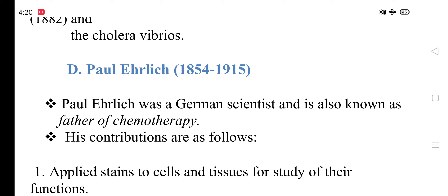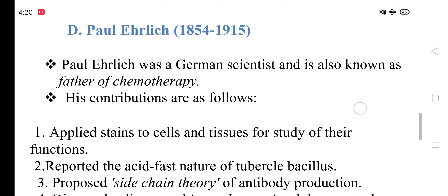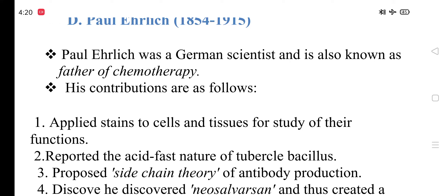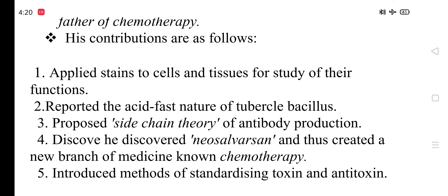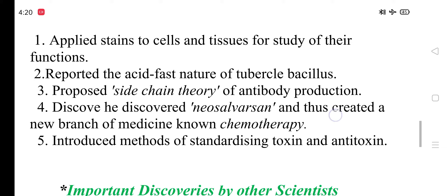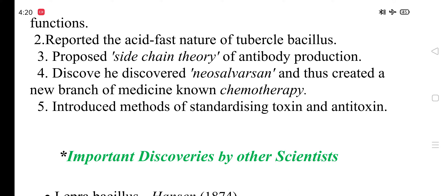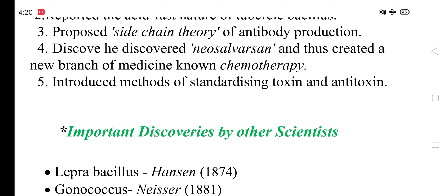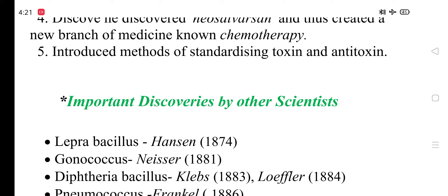Paul Ehrlich was a German scientist and is also known as the father of chemotherapy. His contributions include applying stains to cells and tissues for the study of their function, reporting the acid-fast nature of tubercle bacillus, proposing the side chain theory of antibody production, discovering salvarsan and thus creating the branch of medicine known as chemotherapy, and introducing methods of standardizing toxin and anti-toxin.